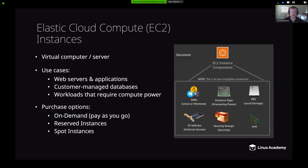Selecting the instance type changes cost. Regarding purchasing options: on-demand is the pay-as-you-go model — you spin up the resource, use it for a couple of hours, and get billed for those hours. But if you have specific workloads running for at least a year, you have another option called reserved instances, which have baked-in discounts. The final purchase option is spot instances, which offer even steeper discounts but with some cons attached.